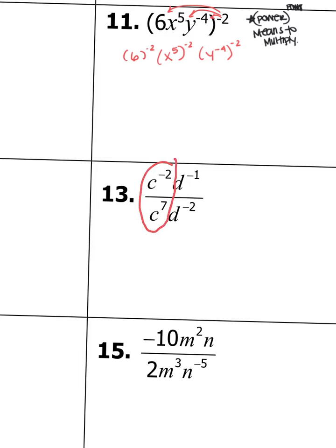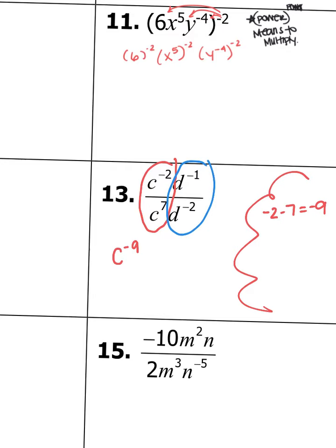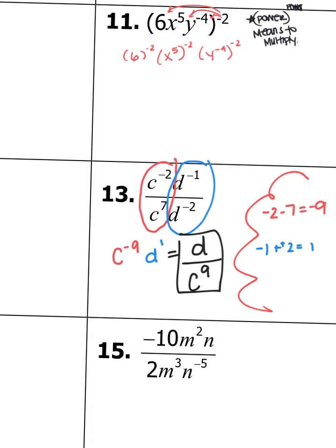For number 13, we have c to the negative second power divided by c to the seventh power. Negative 2 minus 7 is negative 9, so that becomes c to the negative ninth. Then dividing d to the negative first by d to the negative second: negative 1 minus negative 2 is like negative 1 plus 2, which is 1. So I have d to the first power, or just d. My d is positive so it stays in the numerator, and c to the negative ninth goes to the denominator and becomes c to the ninth.